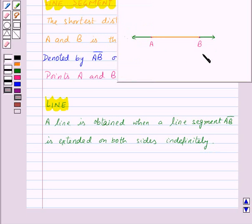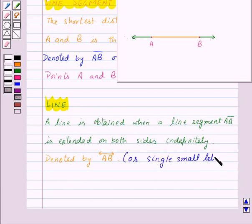Like this. And this line is denoted by line AB. Or we can also denote it by a single small letter like L, N, etc. Say this is line L.